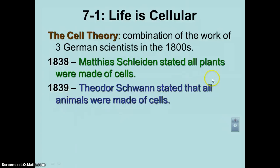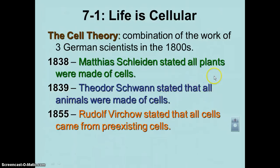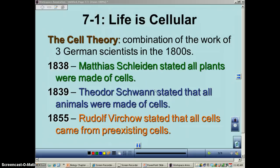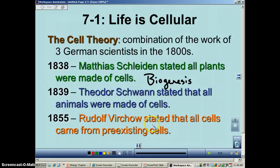The third scientist, about 15 years later, was Rudolf Virchow. He stated that all cells came from pre-existing cells. If you remember from a previous chapter when we talked about biogenesis — life comes from other living things — this fits really well with that statement. The only way a cell is created is from pre-existing cells.